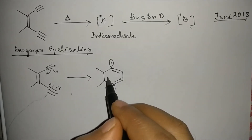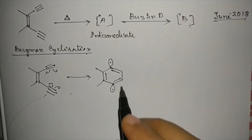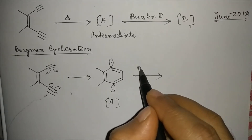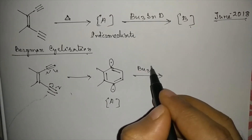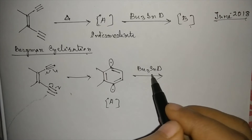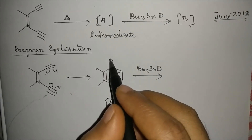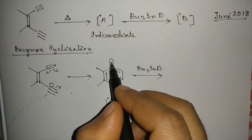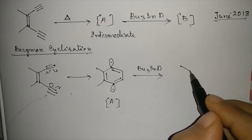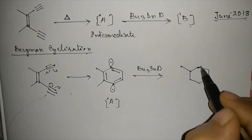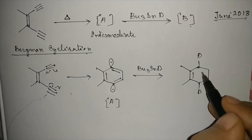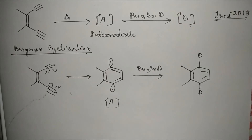So there will be one electron here and one electron here — this is the intermediate A. Now if this intermediate is treated with Bu₃SnD, a deuterium (D) will be provided by Bu₃SnD. This electron will form a bond with D, and a disubstituted benzene will form.